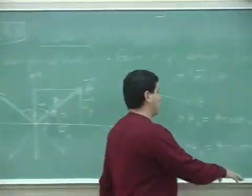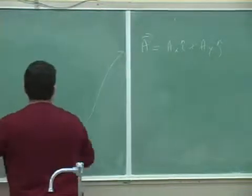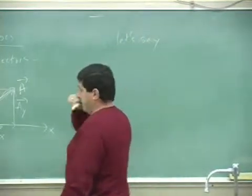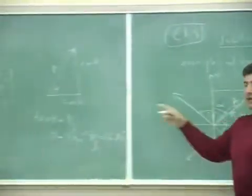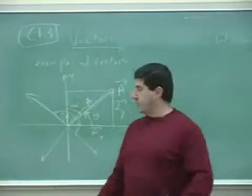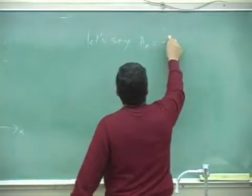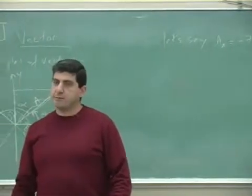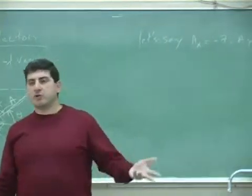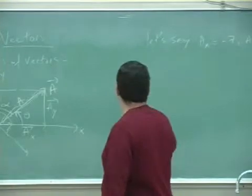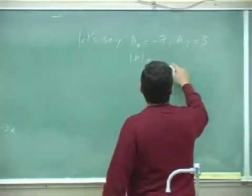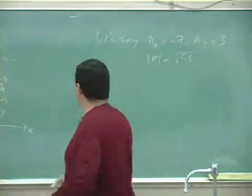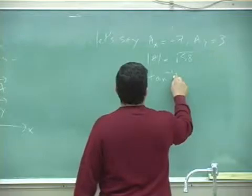Let's do some quick illustrations. We found the angle for ax=3, ay=7 is 66 degrees. Now what if ax is negative 3 and ay is 7? The magnitude is the same: square root of 49 plus 9, which is square root of 58. The magnitude doesn't change based on the quadrant, but the angle does. So here is what happens when you compute theta equals tan inverse of ay over ax.